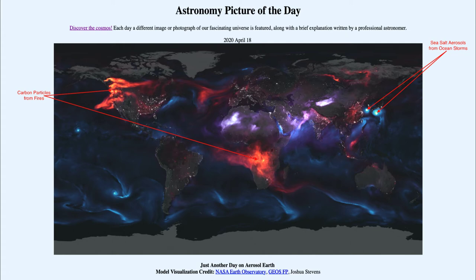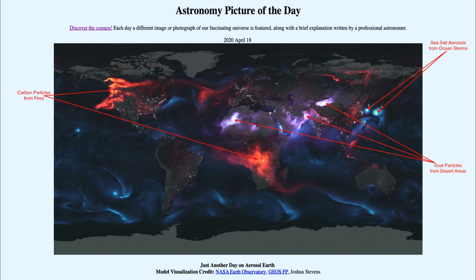The third type is shown in purple. The purple color is caused by dust particles from the great deserts of the world, and we see those in the North Africa and Asian deserts. So these are all different types of particles suspended in the Earth's atmosphere — whether from fires, storms, or desert areas.